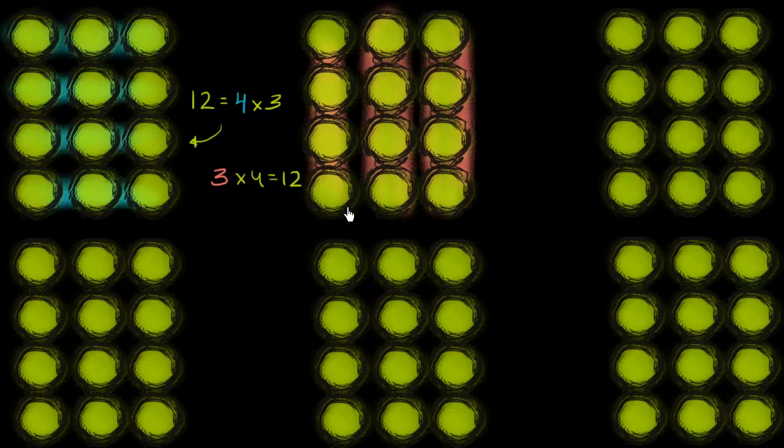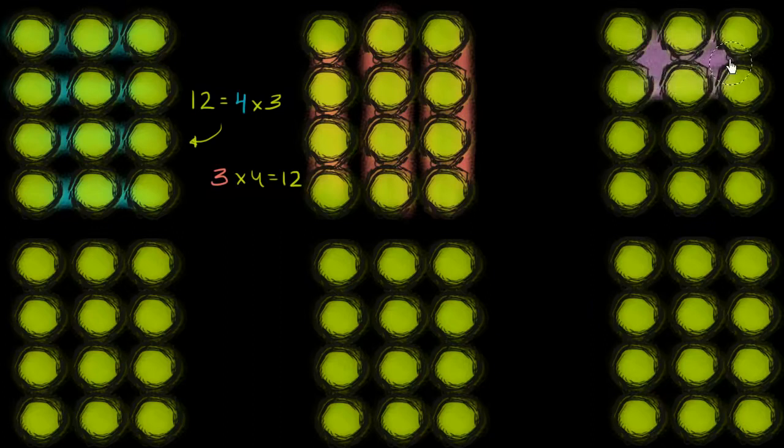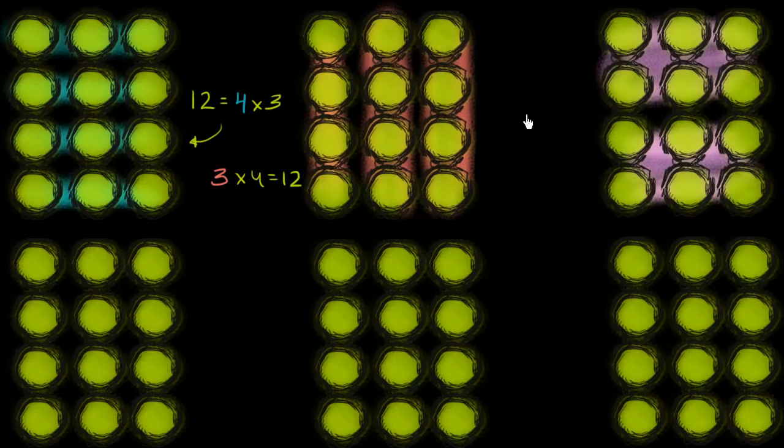We could also view 12 as 2 groups of 6. Let's look at that. So this is 1 group of 6 right over here. That's another group of 6. So once again, we could view this as 2 times 6. Two times 6 will also get us to 12.